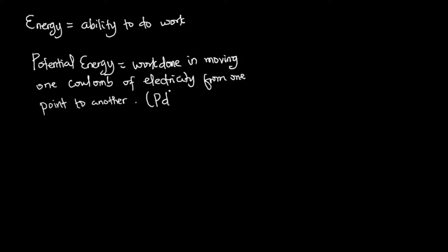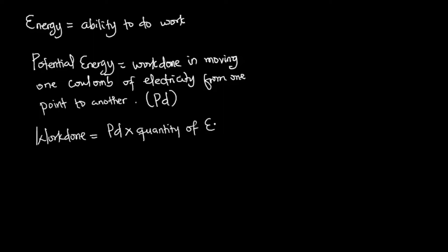The potential energy is normally denoted with the two variables PD, so if you see PD that is the potential difference or potential energy. If we want to get the work done in a circuit, we need to multiply the applied potential energy in volts by the quantity of electricity through the circuit.